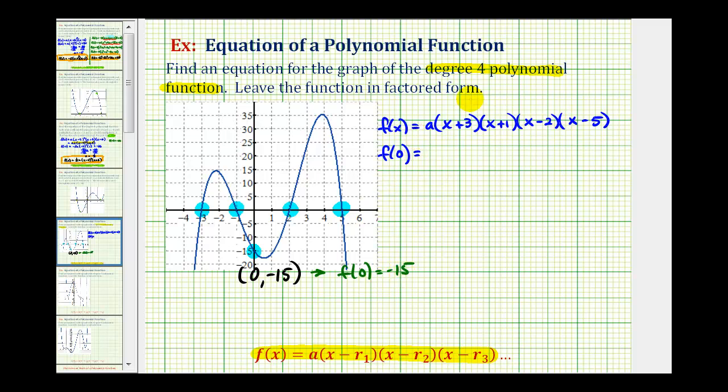If x is equal to zero, we would have a times three times one times negative two times negative five, and this product must equal negative fifteen.